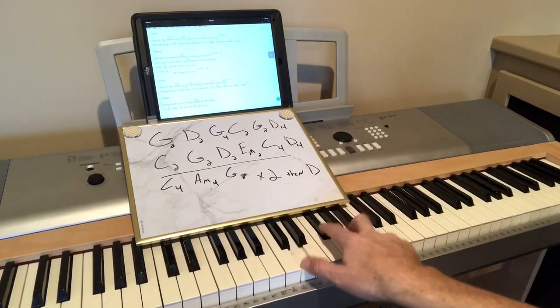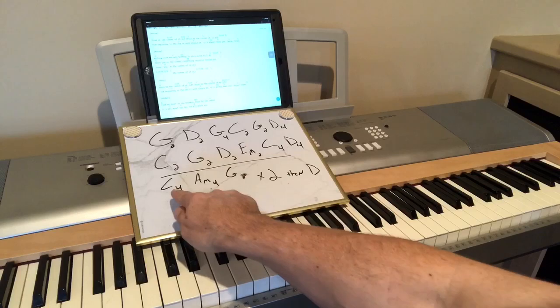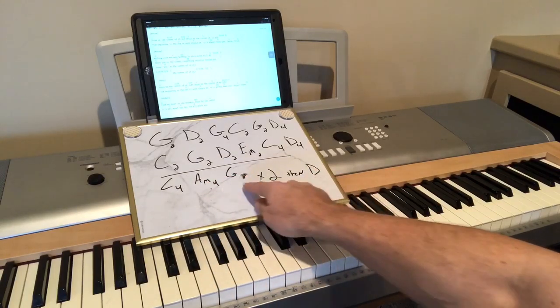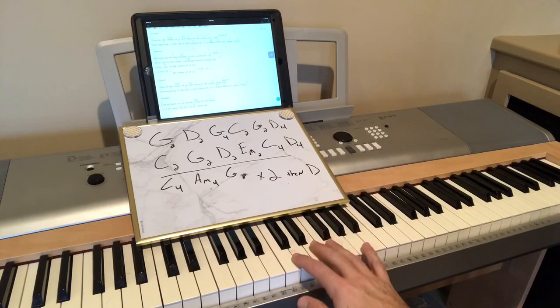And the last time, you do a D. So it's C for four, A minor for four, G for eight. Repeat it, and then do a D at the end instead of just four Gs. So, again,